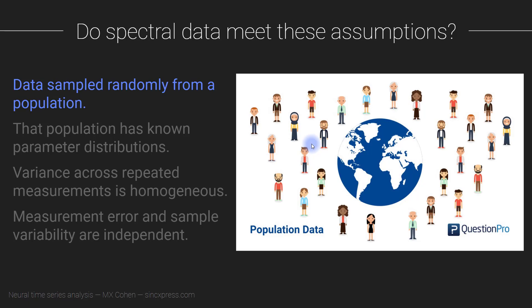In some experiments researchers do try to sample as randomly as possible, but in many others they are not sampling randomly — for example, sampling from educated college students. That is not a problem per se, but it is important to keep in mind when you want to generalize your findings and understand which groups of individuals you can generalize to.